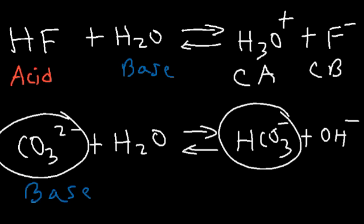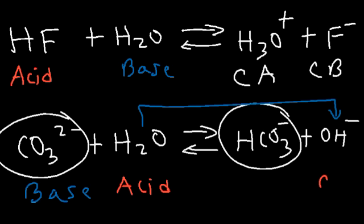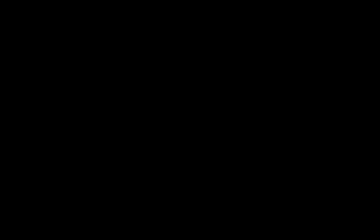Water released a hydrogen ion, going from H2O to OH⁻, so water is the Brønsted-Lowry acid. Going from water to hydroxide is a loss of hydrogen, so hydroxide is the conjugate base. Carbonate gained a hydrogen, and whenever something gains a hydrogen ion it becomes the conjugate acid, so bicarbonate is the conjugate acid of this reaction.